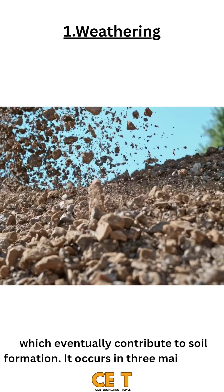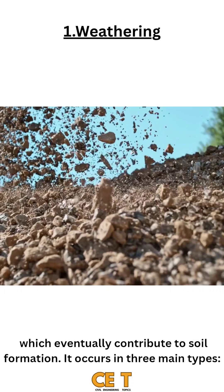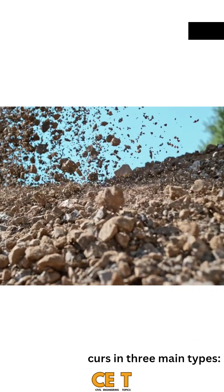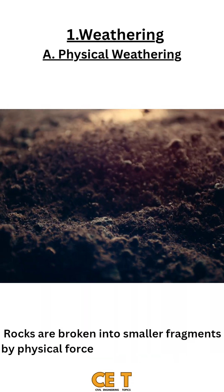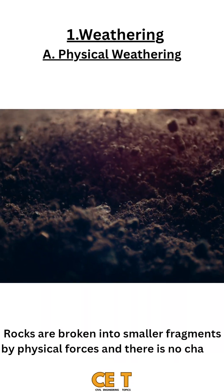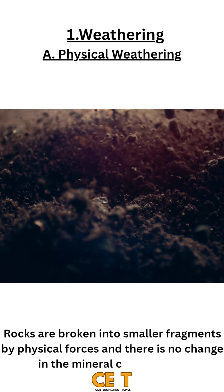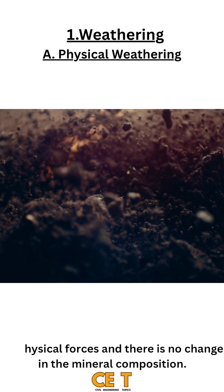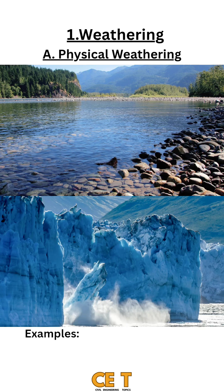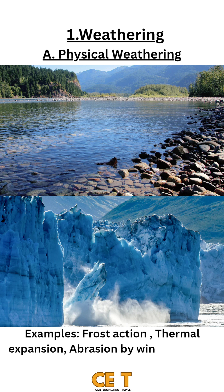Weathering occurs in three main types. The first is physical weathering, where rocks are broken into smaller fragments by physical forces, with no change in the mineral composition. Examples include frost action, thermal expansion, and abrasion by wind, water, or glaciers.